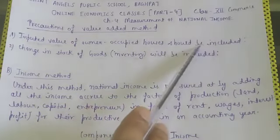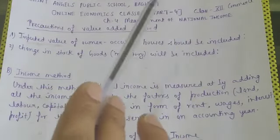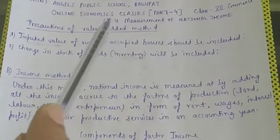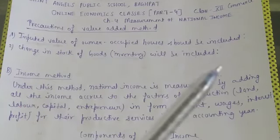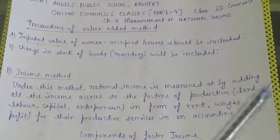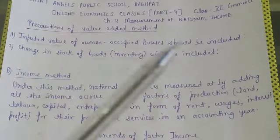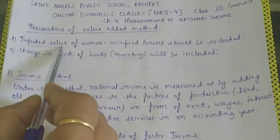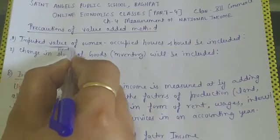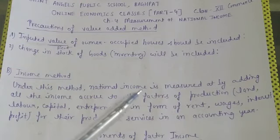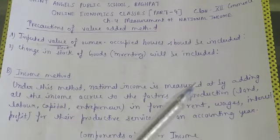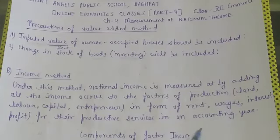This means that people who live in their own houses do not pay any rent. Any rent amount which is not paid out will be called imputed rent. This is the meaning of imputed rent. People who live in their own houses do not pay any rent, but they enjoy housing services.